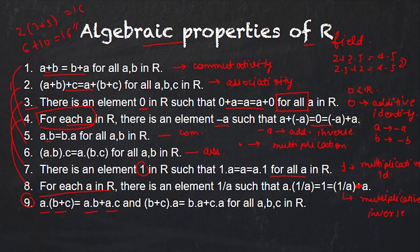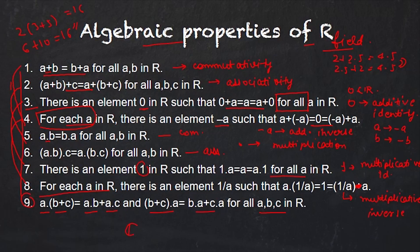There is also the distribution of dot over plus and plus over dot — these are the counterparts and easily checked for all a, b in R. These nine properties are the fundamental algebraic properties of R. R is a field, and any set satisfying these nine properties is also a field. For example, complex numbers satisfy all nine properties, so complex numbers also form a field.